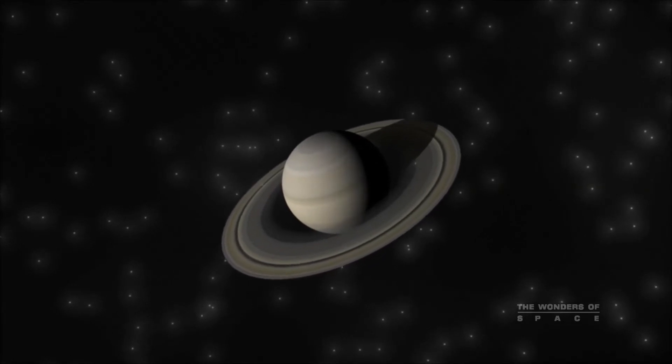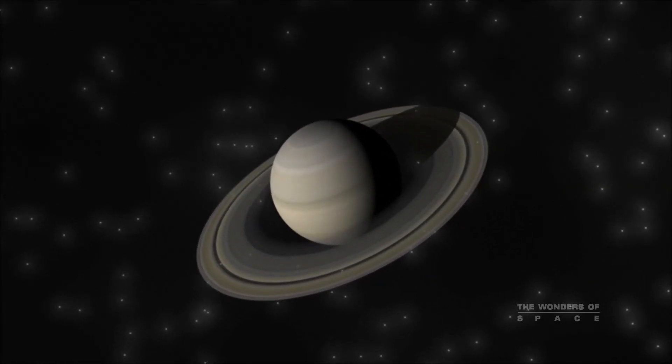Saturn is the second largest of the planets, only Jupiter is larger. Like all the gas giants, it has a system of rings, and the rings of Saturn are glorious.